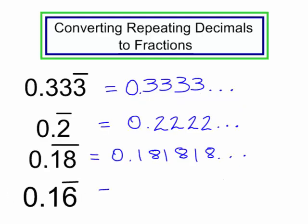0.16 with a bar over the 6 — this number is 0.1 and then the 6's keep repeating.